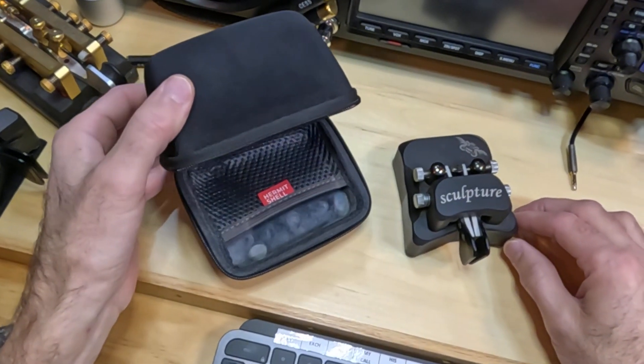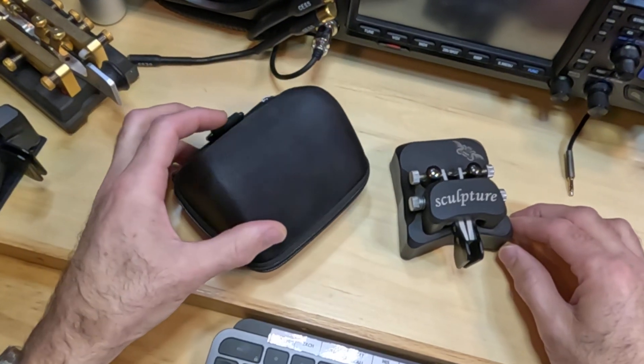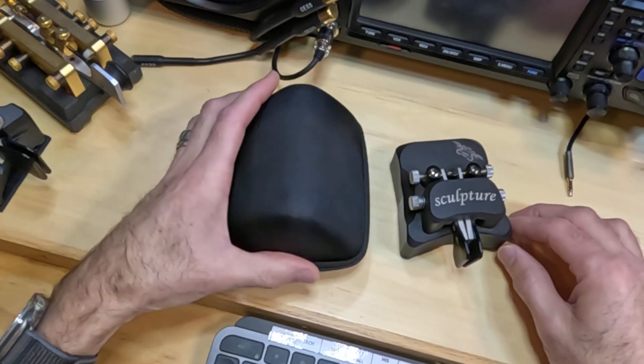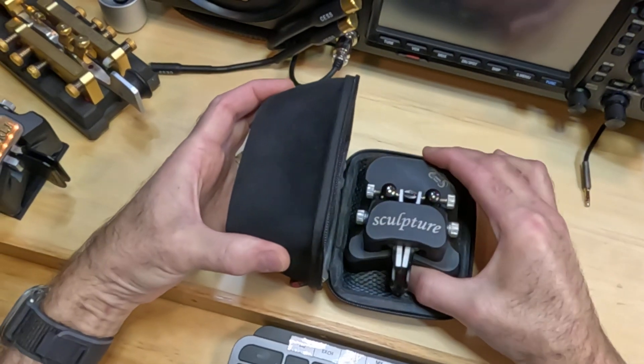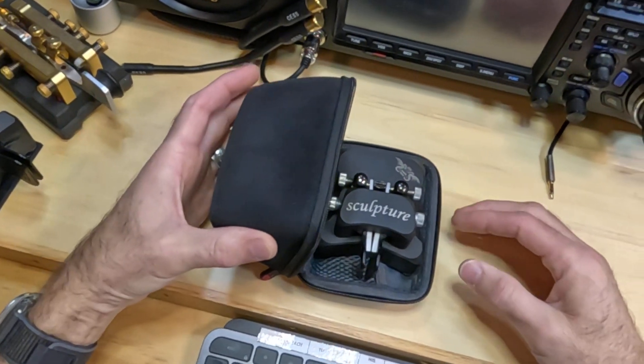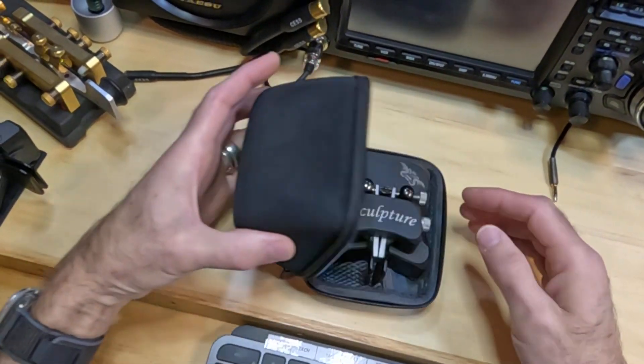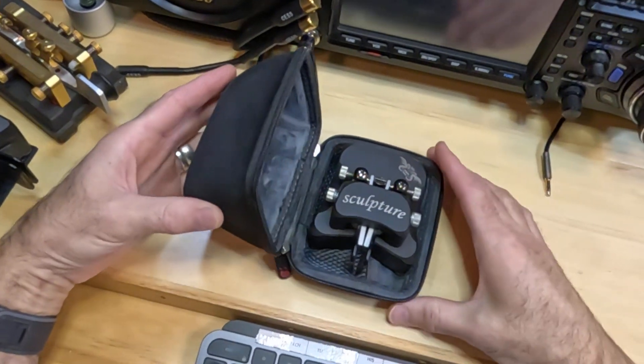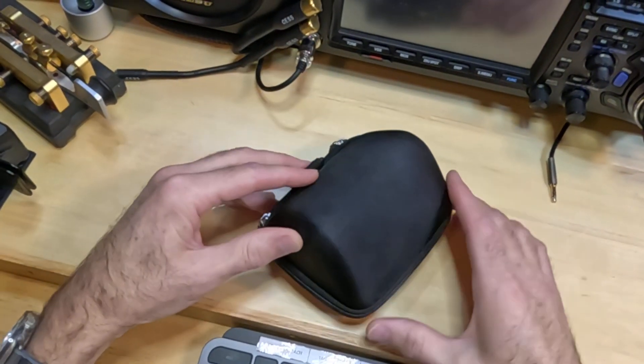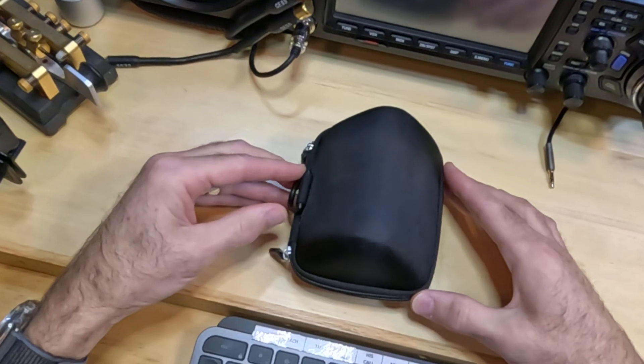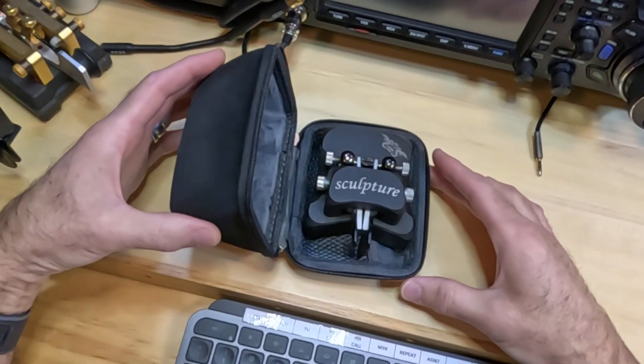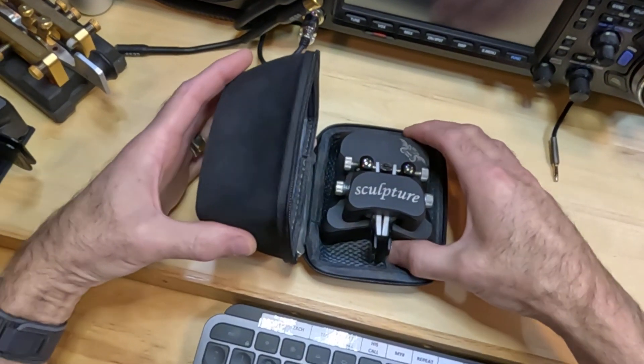This is a hermit shell case and it's really intended for a Bluetooth speaker but it works very well for the Begali Sculpture. The shape of the lid comes at just the right point where it holds the key in place and keeps it protective from any usual rough handling.